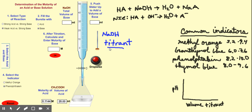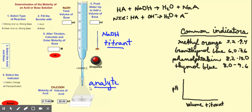Your titrant can be a number of things — it can be a strong base, a strong acid, or even a weak acid or weak base, though for AP Chemistry we mostly deal with strong bases and strong acids as the titrant. The thing that is in our flask is known as our analyte — it is the thing that we are trying to analyze and find information about.